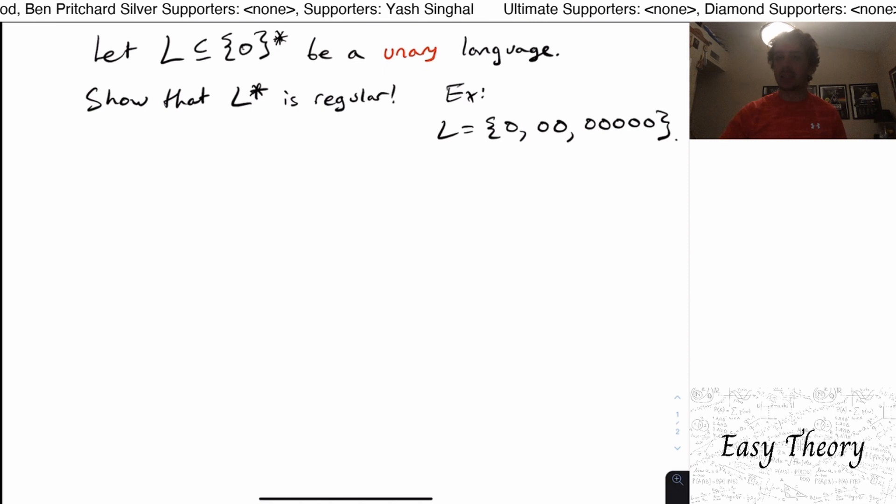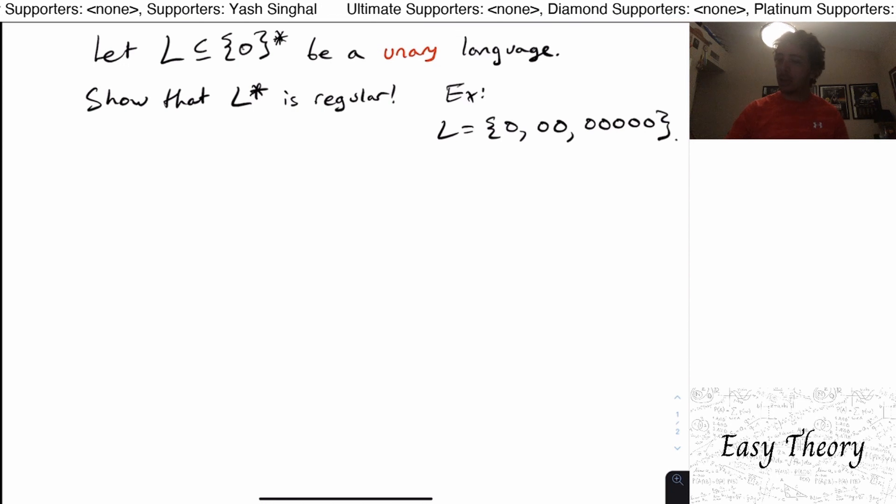So this language only has strings with only zeros in them. That's what unary means. If we had like a zero one or something that would not be a unary language. Here we have L to be any unary language, so it could either be regular or not. What we're tasked to do here is to show that L star is always regular.